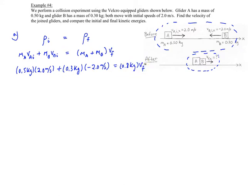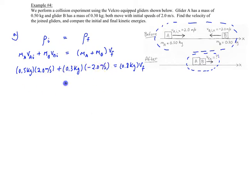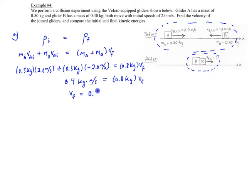Simplifying both sides: 2 times 0.5 gives us 1 kilogram meter per second, and 0.3 times negative 2 gives us negative 0.6. Combined, that gives 0.4 kilogram meters per second, equal to 0.8 kilograms times the final velocity. So the final velocity is 0.4 divided by 0.8, which is 0.5 — half a meter per second. That's positive, meaning it's going to the right as shown in the diagram. That's part A — we found the final velocity.